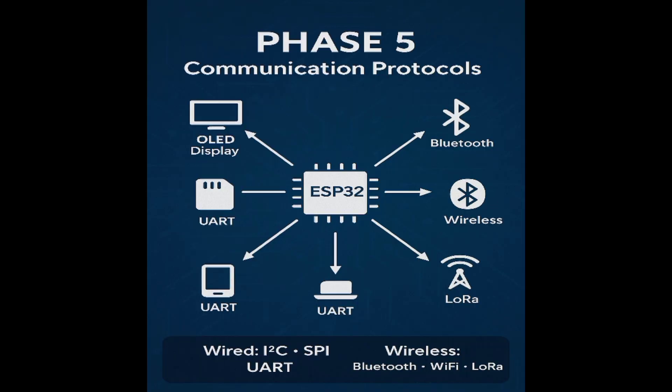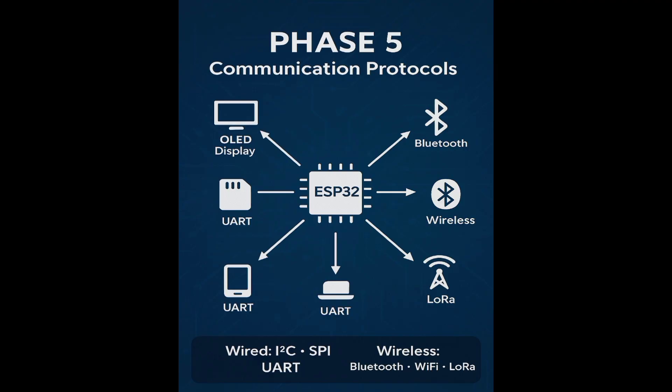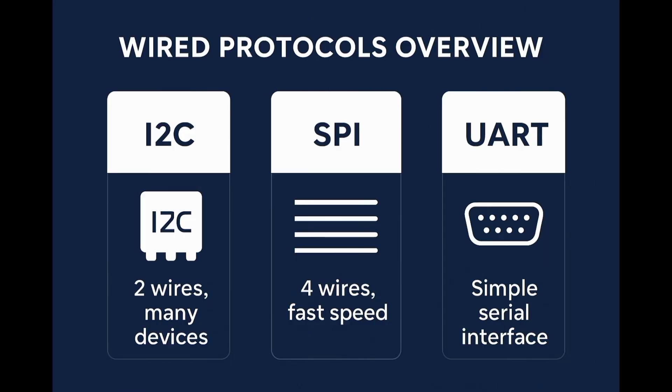Next on our embedded system roadmap are communication protocols. In embedded systems, communication protocols are rules and standards that allow microcontrollers, sensors, displays, or hardware to talk to each other within a system or with external devices. The key protocols include I2C, SPI, UART, and Bluetooth or Wi-Fi modules connected to the board.